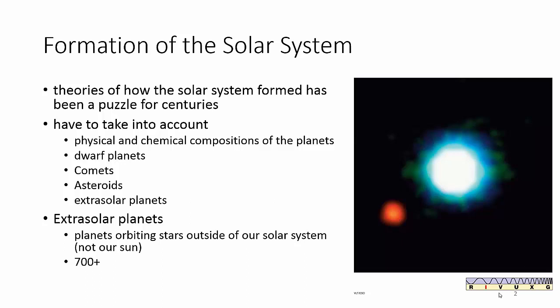This has kind of always been the big question, right? How did we get here and why are we here? Those are kind of the big questions. So if you want to figure out the whole how did we get here thing, you have to take into account physical and chemical compositions of the planets. You have to look at dwarf planets, comets, asteroids, meteorites. You also have to look at extrasolar planets.